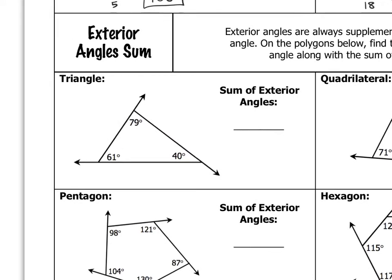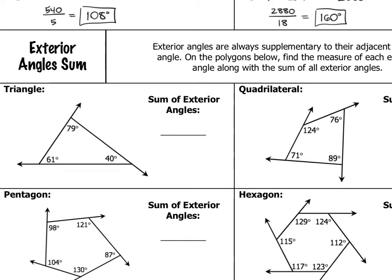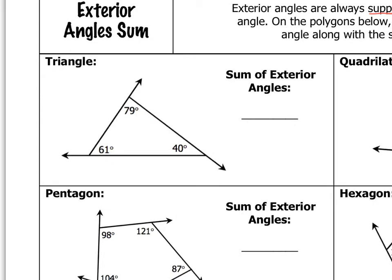Here I have a triangle. The interior angles are 79, 61, and 40 degrees. To find the exterior angles — I've extended the sides of the triangle so you can more clearly see those — we just need to subtract each interior angle from 180, because exterior angles are supplementary to their adjacent interior angles. Our first exterior angle is 101 degrees, because 101 plus 79 is 180. The next one is 119 degrees, and our last one is 140 degrees. If I add up those three exterior angles, I get 360 degrees.